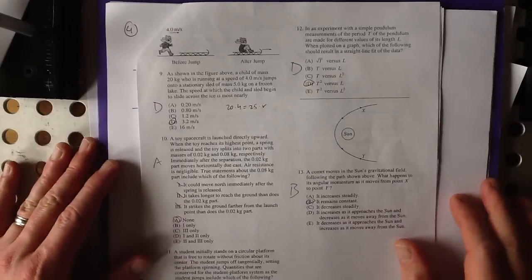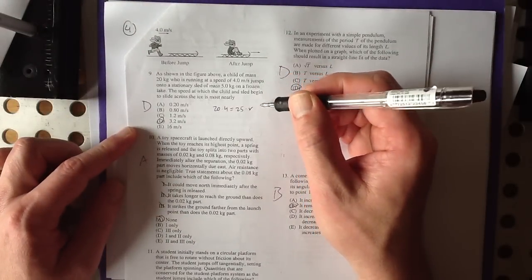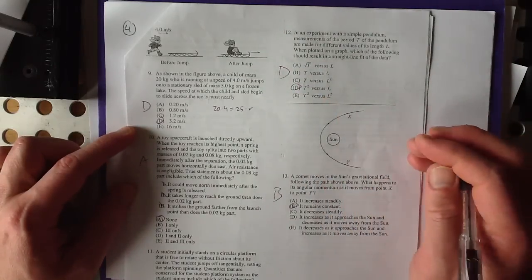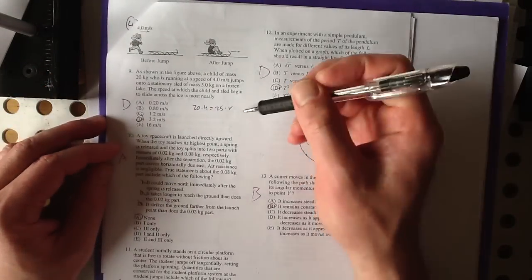Okay, I think we're upside right here. These are the solutions for numbers 9 through 13 from your practice physics test, AP Physics C.